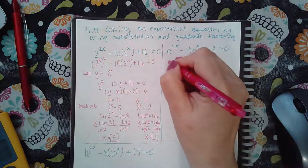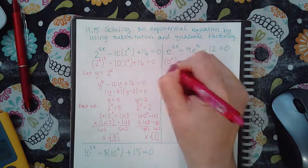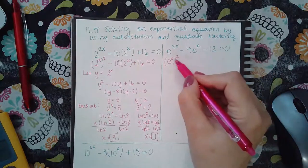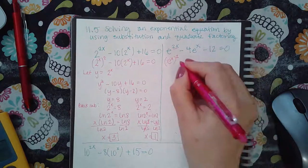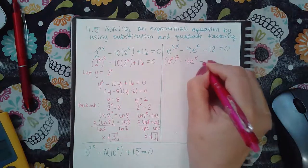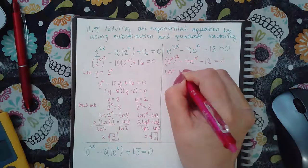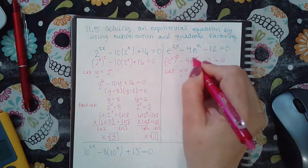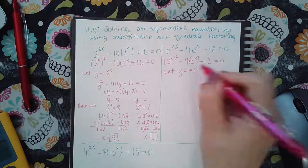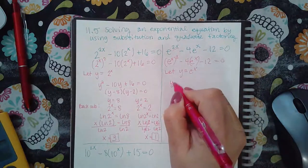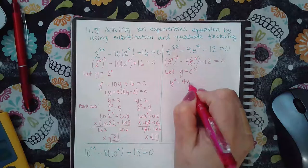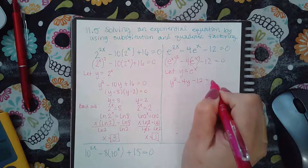Now similarly, this one can be written as e to the x squared. And then when you multiply those exponents, you do get the 2x, so that is equivalent. And then you can say, let y equal this e to the x part. And when you replace the e to the x, you get y squared minus 4y minus 12 equal to 0.